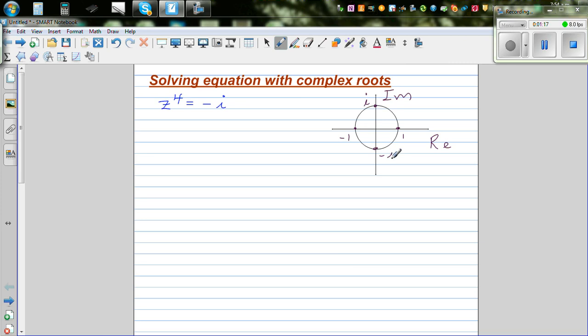So here the question is, if z to the power 4 is negative i, which are the roots here? Now to solve equations of this type, we need to write this in polar form. So minus i is—now this is the origin O. If you want to describe minus i in polar form, what you say is...